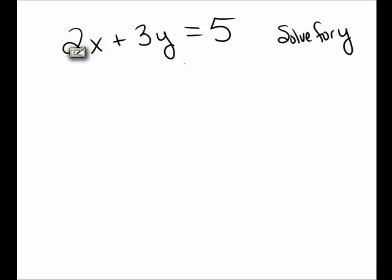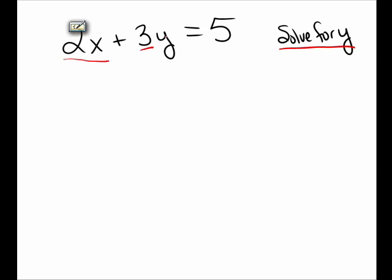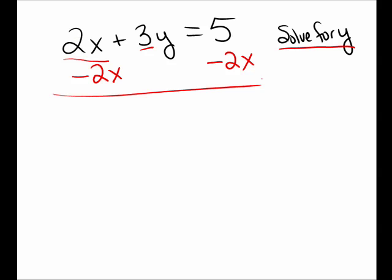If 2x plus 3y equals 5 and we want to solve for y, I want to get y equals and everything else on the other side. Remember your rules when solving linear equations: do your additions and subtractions first, and your final step should be multiplication or division to isolate the variable. In this case, the 2x is added and the 3 is multiplied to the y, so I will first subtract 2x on both sides. This will cancel 2x on the left, leaving 3y on the left. On the right, I have negative 2x plus 5.